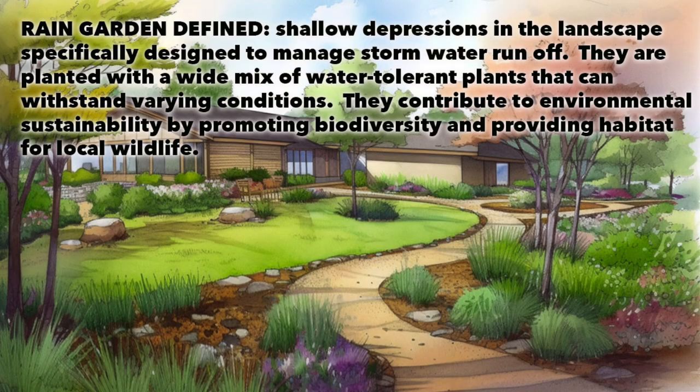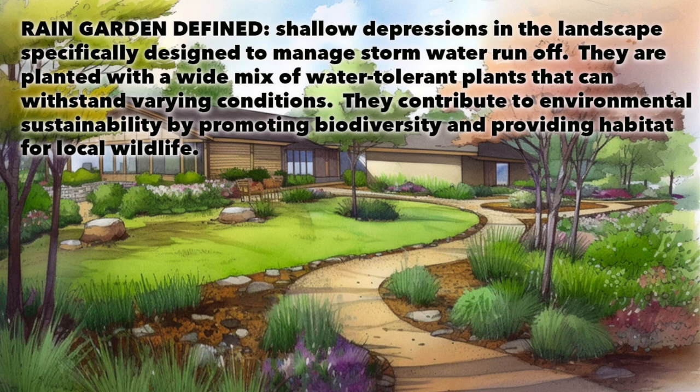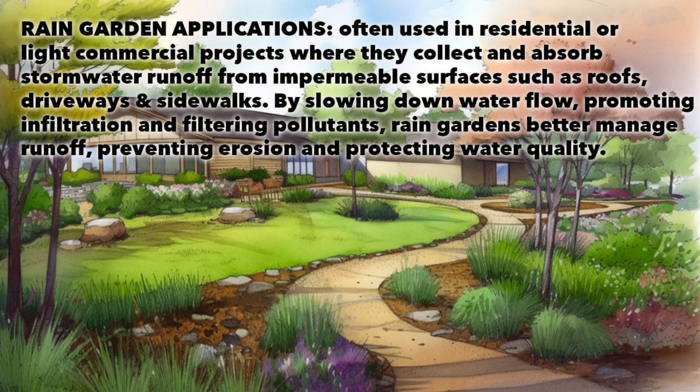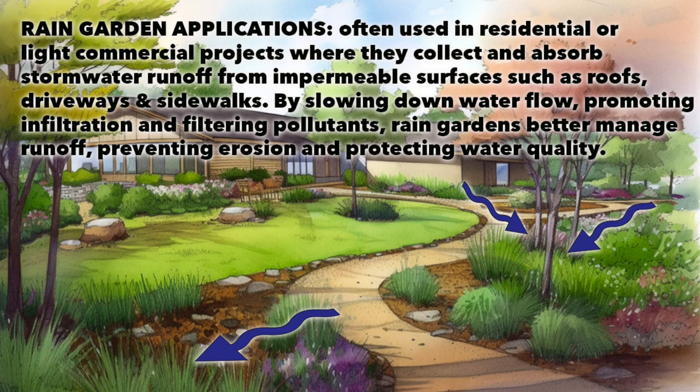Rain gardens, on the other hand, are more like shallow depressions in your yard or around your home that can catch rainwater from your roof, driveway, or sidewalk. Rain gardens are typically closed systems, but they do the same thing as bioswales in that they help protect water quality by filtering out pollutants, slowing down water flow, and controlling erosion.